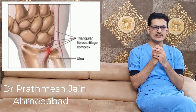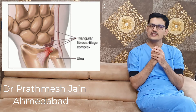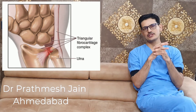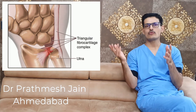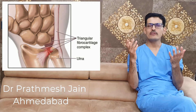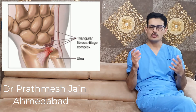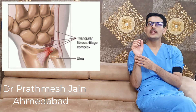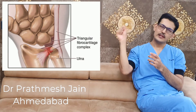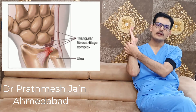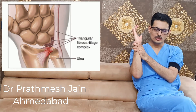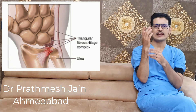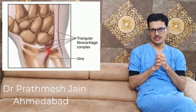Regarding signs and symptoms: first, there will be a history of fall or injury to the wrist joint. Occasionally it may be due to repetitive micro-trauma, such as in a hard manual laborer or a sports person. In racket sports like tennis or baseball, swinging the racket or bat can directly injure the TFCC, giving rise to a TFCC injury.